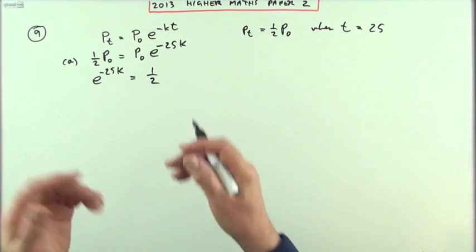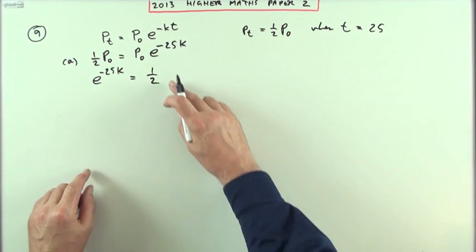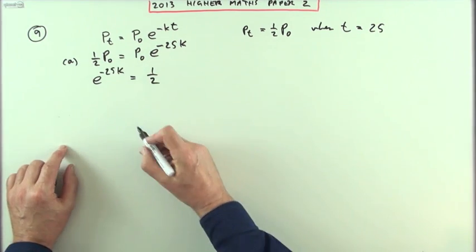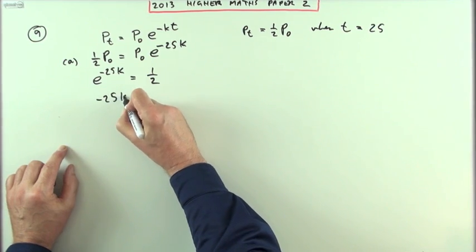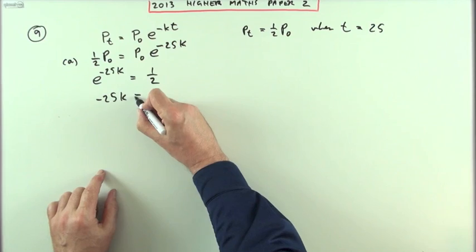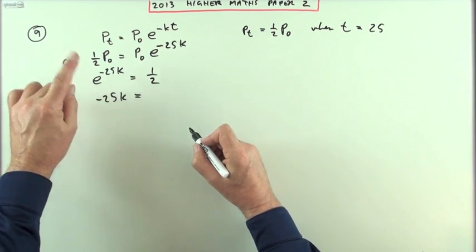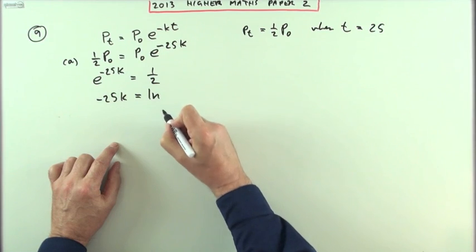You may well have jumped straight in with that statement, since you knew that the factor must be a half. Get rid of the e now, so apply the inverse. The inverse of exponential is log. The inverse of e to the power will be log base e. I'll just write ln.